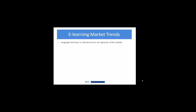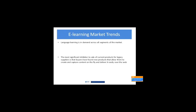A few more trends emerging globally: language learning is in demand across all segments. The most significant inhibitor of sales for those repackaging legacy systems is that new software and products allow people to create and capture content on the fly and deliver it very easily. Tools like Articulate, or even YouTube, mean people can do much more in-house than they were able to in the past. So that's a bit of a competitor piece.